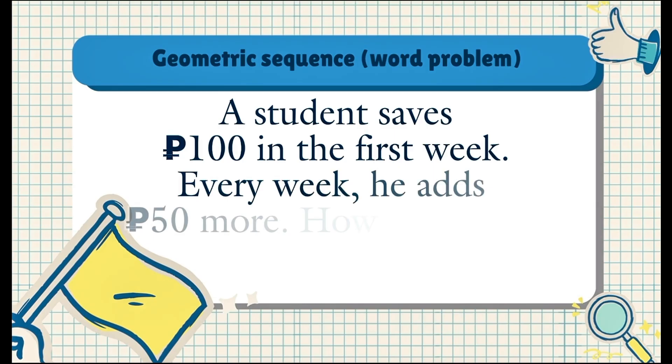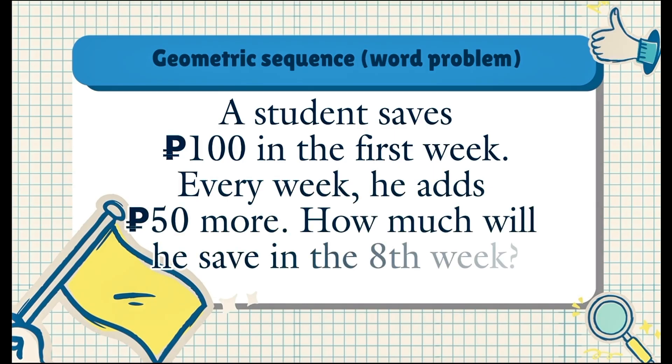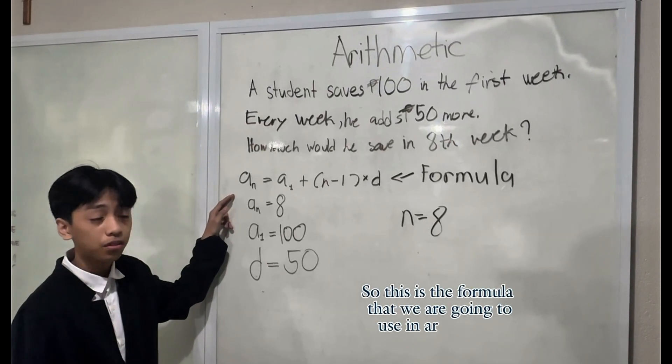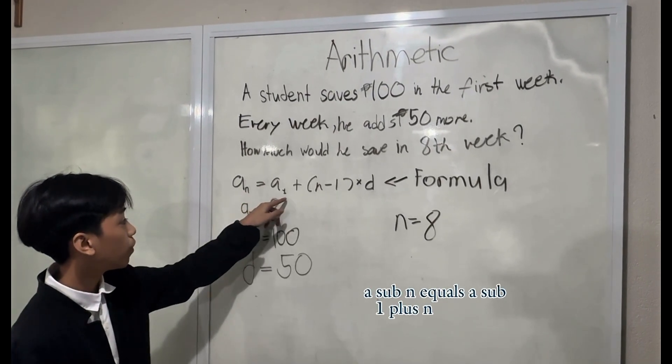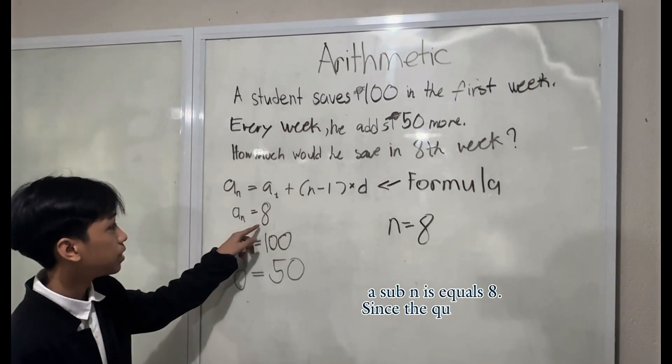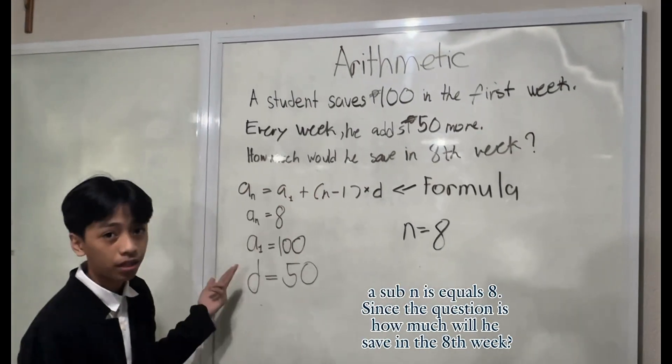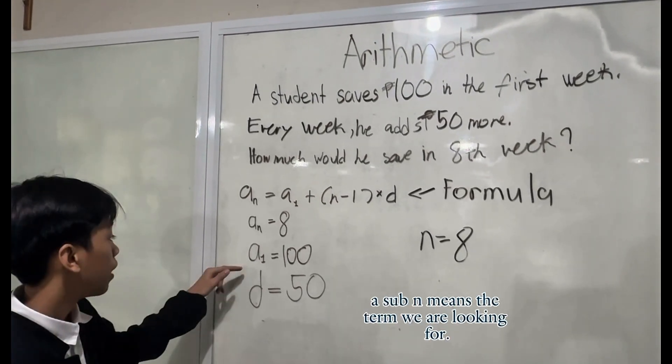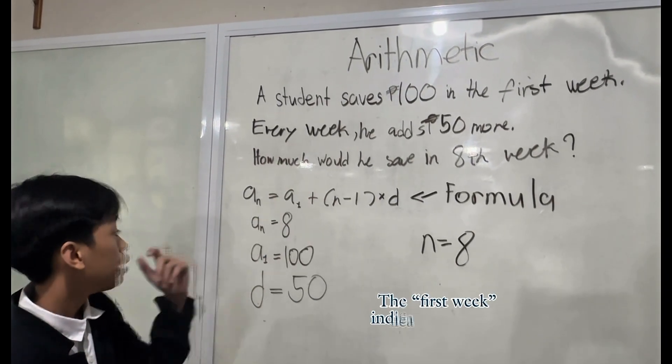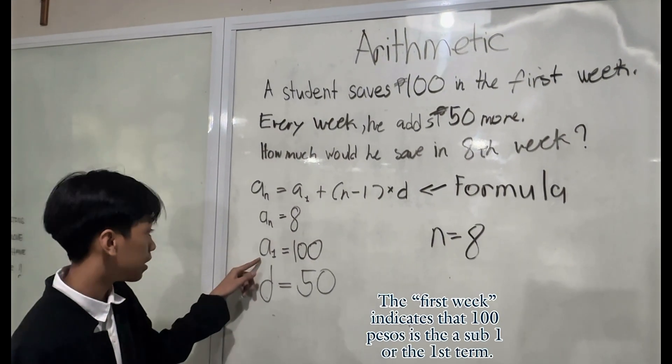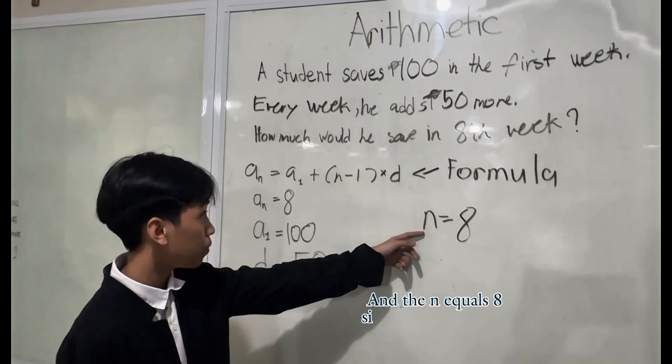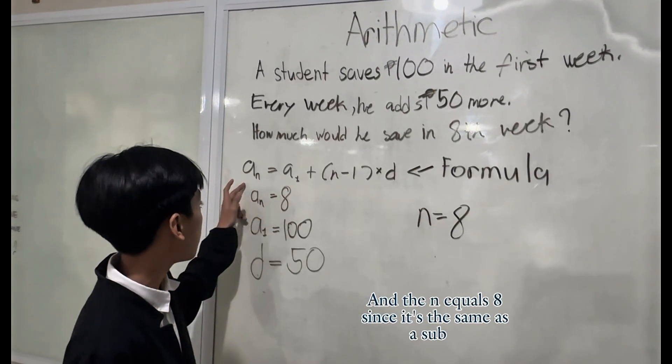So let's see if you understand. A student saves 100 pesos in the first week. Every week he adds 50 more. How much would he save in the eighth week? This is the formula that we are going to use in arithmetic sequence: a sub n equals a sub 1 plus (n minus 1) times the common difference d. a sub n means the term we are looking for. a sub 1 equals 100 as he saved 100 pesos in the first week. The common difference is 50 since every week he adds 50 more. And n equals 8 since it's the same as a sub n.